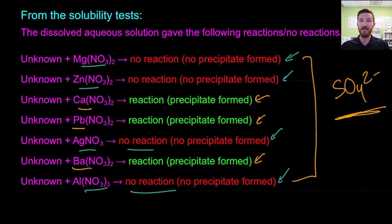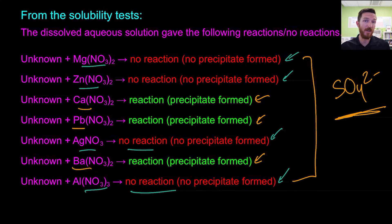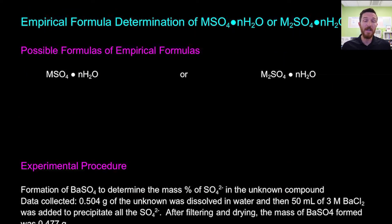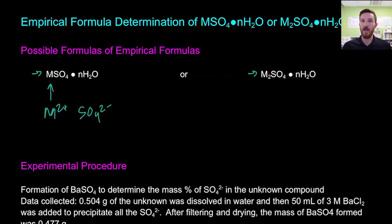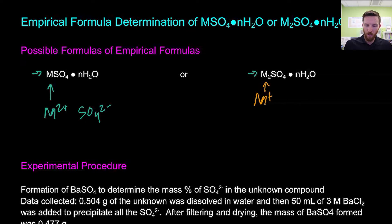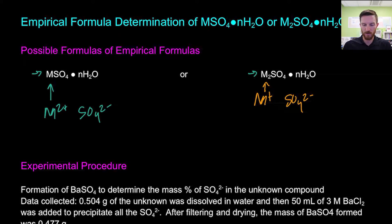Our precipitation reactions give us the ability to identify what negative ion or anion we have. Now we can figure out the positive ion as well as the waters of hydration. We see there are two possible ways that our metal can combine with sulfate depending on the ion charge. If we have a two-plus charge for that metal, there'll be a one-to-one mole ratio, because our sulfate ion has a two-minus charge. If we have a plus-one charge, we're going to have a two-to-one mole ratio.